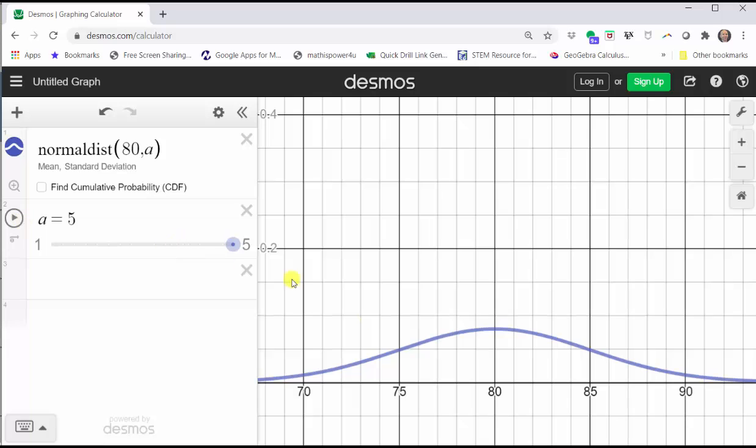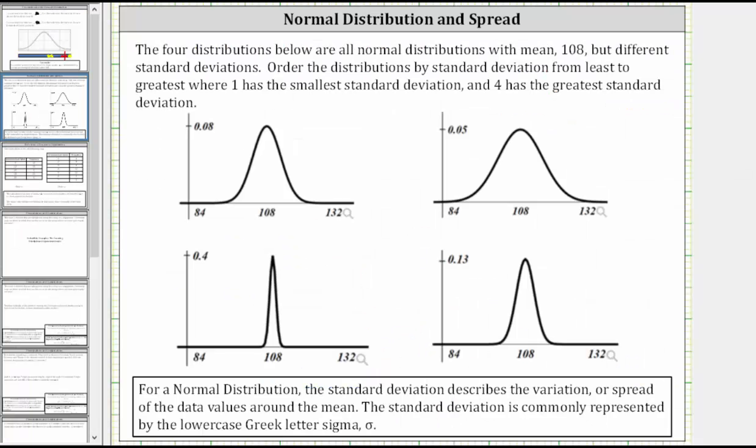Going back to our problem, we're told to order the graphs by standard deviation from least to greatest, which is the same as ordering the graphs by their spread or variation from the mean from least to greatest. So the graph that has the least spread or least variation from the mean has the least standard deviation, which would be this graph here in the lower left-hand corner. We label this one.